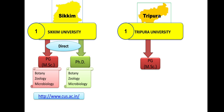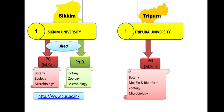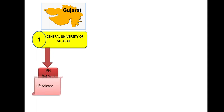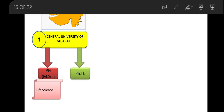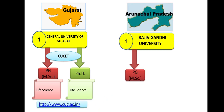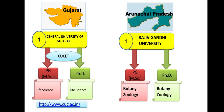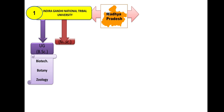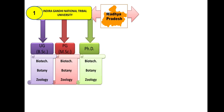Tripura University: MSc in Botany, Molecular Biology, Bioinformatics, Zoology, and Microbiology. Admission is direct. Next, Central University of Gujarat: PG in Life Science and PhD in Life Science. Admission will be through CUCET. Arunachal Pradesh: MSc in Botany and Zoology; PhD in Botany and Zoology. Admission direct or through their own CET. Madhya Pradesh has two universities. Indira Gandhi National Tribal University: BSc in Biotechnology, Botany, and Zoology; MSc in same subjects; PhD in same subjects. Admission through their own entrance.